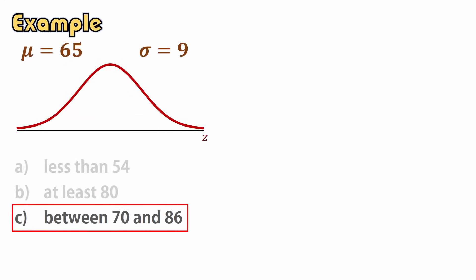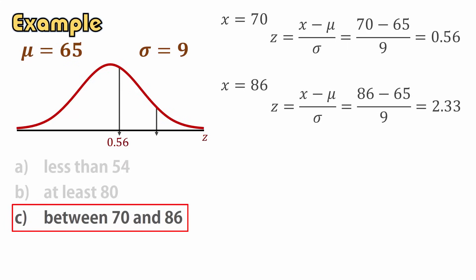In c, we want the probability that x is between 70 and 86. For x equals 70, z equals 0.56. And for x equals 86, z equals 2.33.